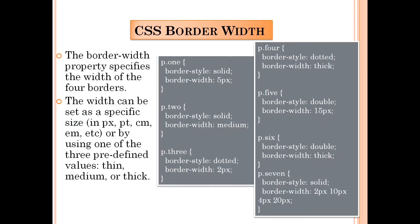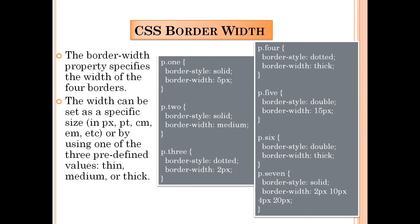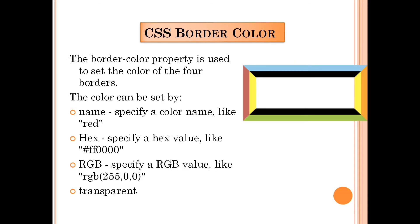Next, we have the CSS border width. The border-width property specifies the width of the four borders. The width can be set as a specific size or by using one of three predefined values: thin, medium, or thick. The border-width property can have from 1 to 4 values for the top, right, bottom, and left borders.